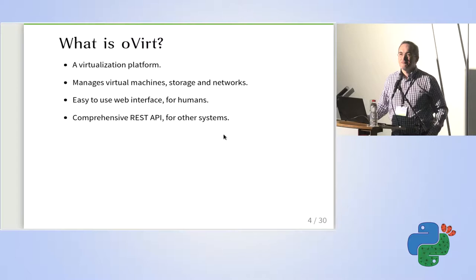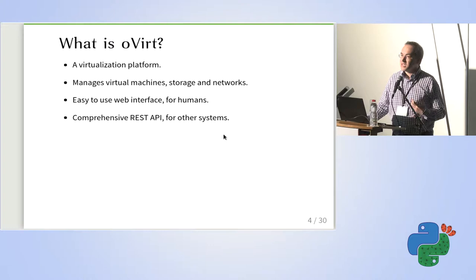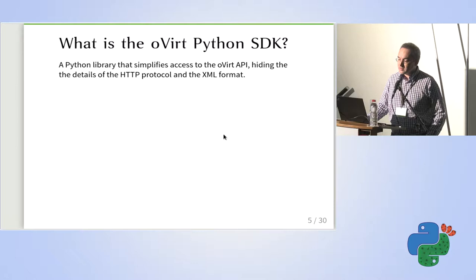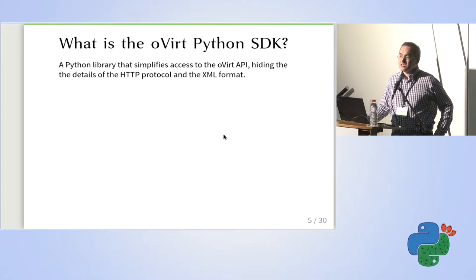oVirt is basically a virtualization platform that allows you to manage virtual machines, manage storage, manage networks. It has a nice graphical user interface designed for humans, and it also has a nice REST API designed for use by other systems. On top of that API, we also provide a Python SDK, in addition to other SDKs.